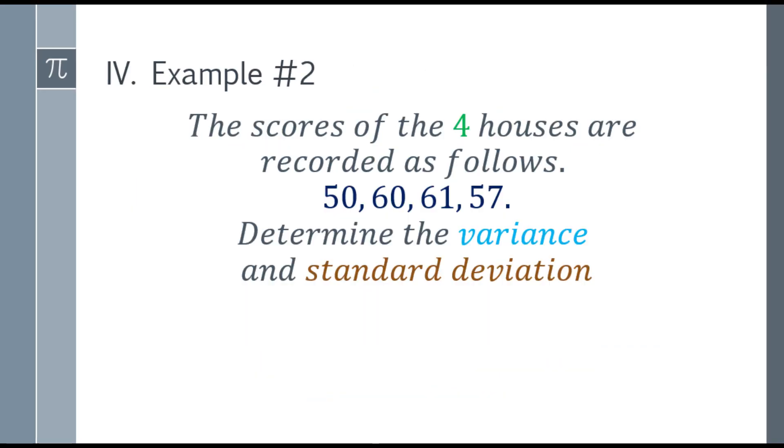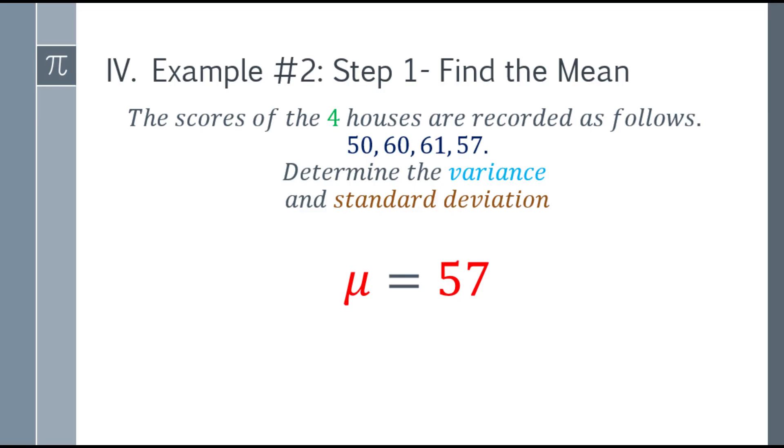Let's move to example number 2. The scores of the 4 houses are recorded as follows: 50, 60, 61, and 57. Determine the variance and standard deviation. Okay, so step 1, find the mean. So our mean here is 57.